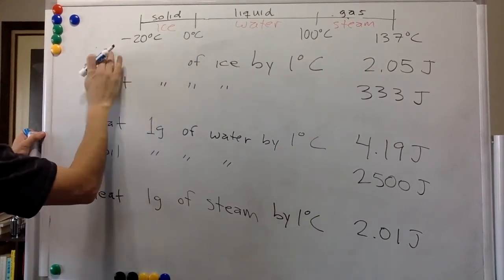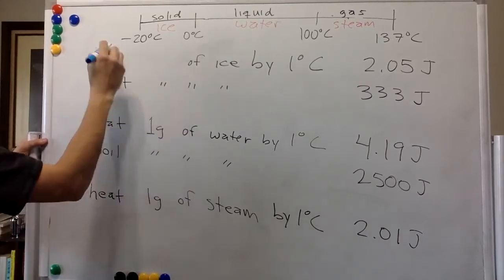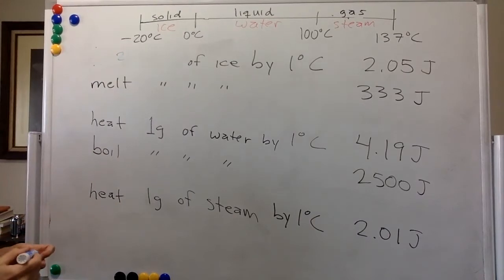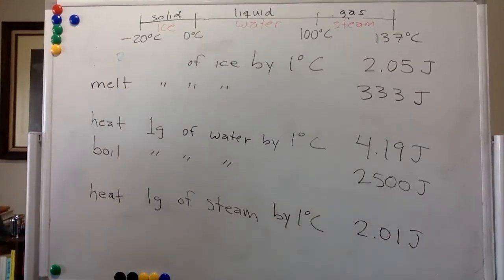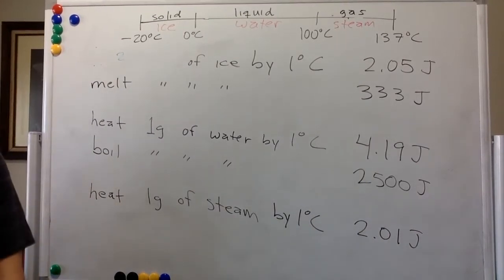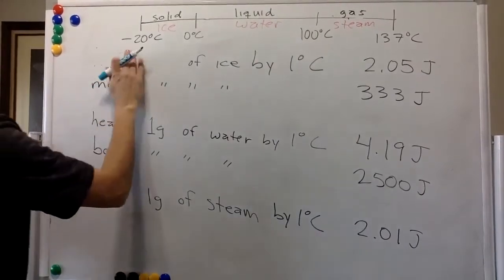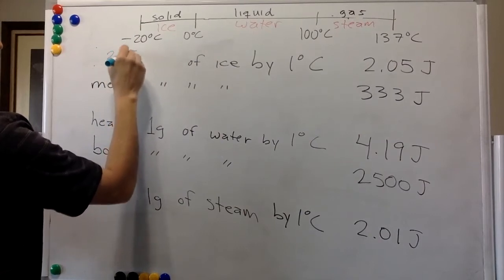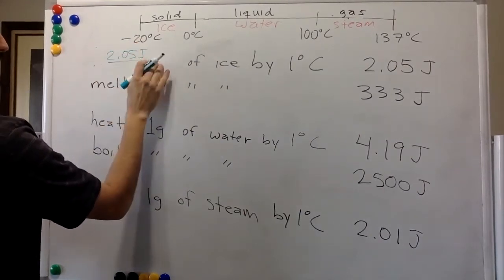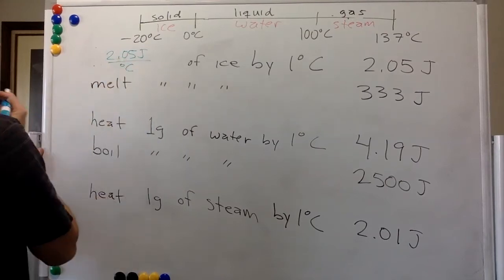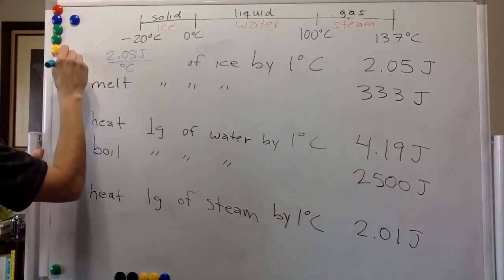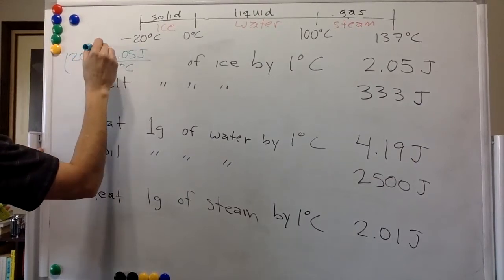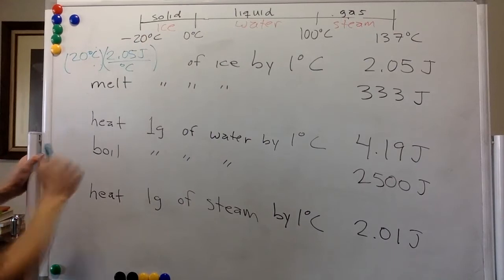I guess the right way to write it will be 2.05 joules per Celsius. And we want to do 20 Celsius, right?